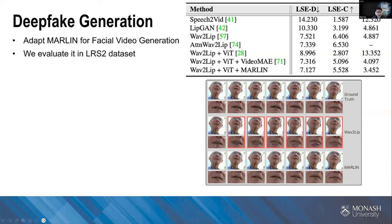We evaluated on the LRS2 dataset. From the FID metric — normally used for evaluating generation quality — MARLIN has better results compared to Video MAE and vanilla Wav2Lip, while the lip sync score also doesn't drop too much. Visualization shows that vanilla Wav2Lip fails in some scenarios when the speaker is not facing forward — generating artifacts like double lips in the border region — but the MARLIN version has solved this problem.